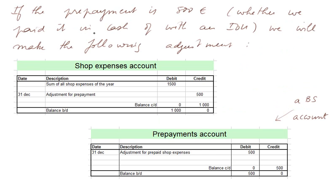Notice that whether we paid it in cash or not doesn't make any difference. We'll make the following adjustment: in the shop expenses account, we shall make an adjustment at the end of the year of 500 in credit to compensate this 1,500 of charges of the year. And at the same time, in a new account called prepayments, we would make the adjustment in debit of 500 euros. This is a balance sheet account — it will end up in the balance sheet.